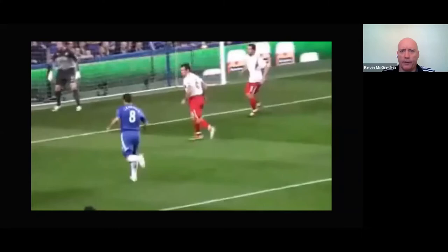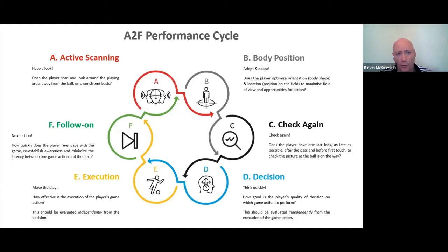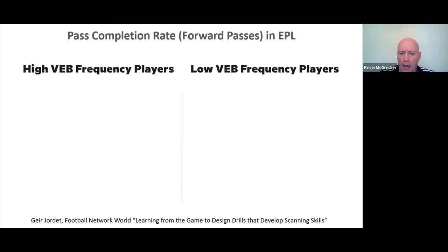A Frank Lampard video is shown again — roughly 18 scanning moments counted — illustrating how frequently he looked around during play, contributing to his top career. The A-to-F cycle is revisited: active scanning leads the cycle and informs everything else. Viewers are encouraged to search YouTube for Football Network World's video on 'learning from the game to design drills that develop scanning skills.'